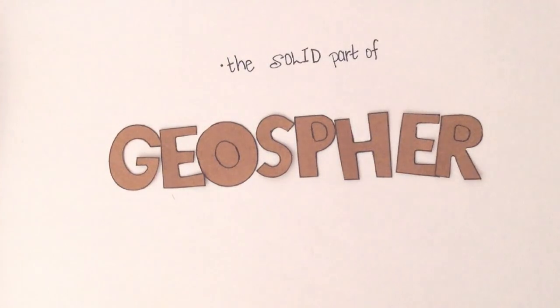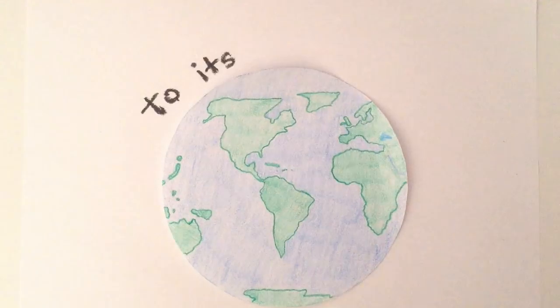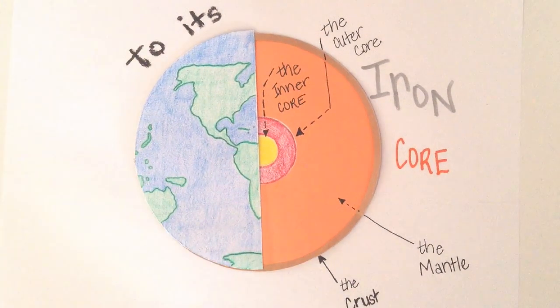The geosphere is the solid part of the Earth, from its rocky surfaces to its iron core. The crust, the mantle, the outer core, and the inner core.